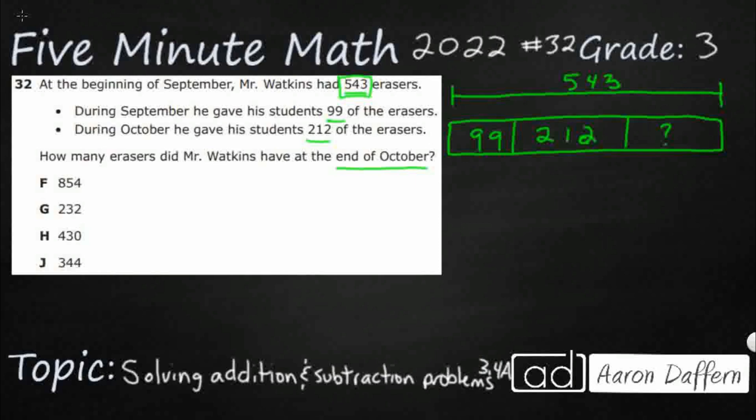The missing erasers at the end, the number of erasers at the end of October. So if we look at it like this, 99 plus my 212, those are the two that he gave away, plus whatever he has left, all those three together is going to equal my starting point, 543. All right. So that's a pretty good representation of what we have here.